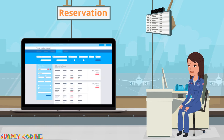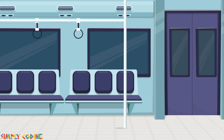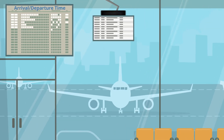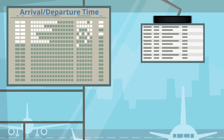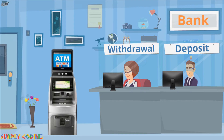Computers help in travel by helping to do ticket reservation for aeroplanes, railways, buses, etc. They also help in getting correct information about arrival and departure timings.